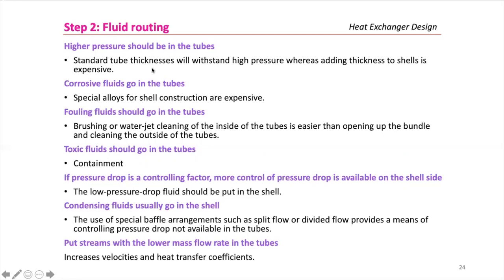General guidelines for fluid routing: higher pressure fluid should be in the tubes; corrosive fluids go in the tubes (leaks contained in shell); fouling fluids go in the tubes (easier to clean by brushing or water jetting); toxic fluids should be in the tubes for containment; if pressure drop is controlling, put the low-pressure-drop fluid in the shell; condensing fluids usually go in the shell; put the stream with the lower mass flow rate in the tubes to increase velocity and heat transfer coefficient.